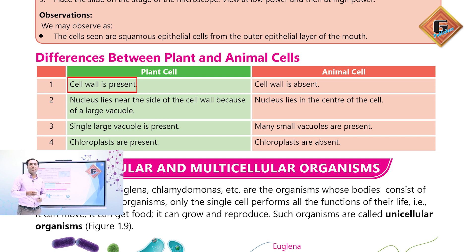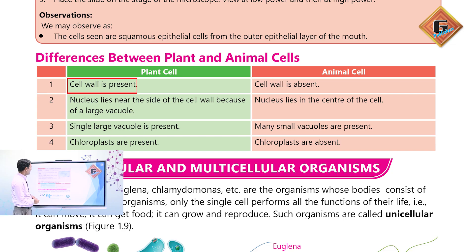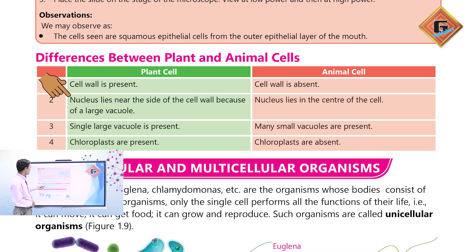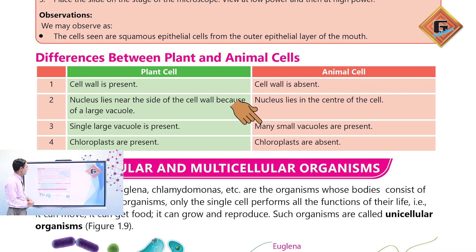The first point is that the cell wall is present in plant cells but not in animal cells. The second point is that in plant cells the nucleus is near the side of the cell wall because of a large vacuole, while in animal cells the nucleus is present in the center. The third difference is that a single large vacuole is present in plant cells, while animal cells have many small vacuoles.